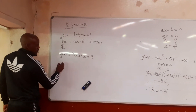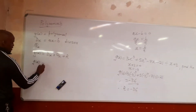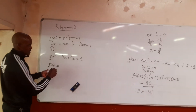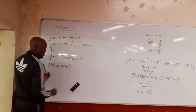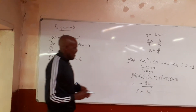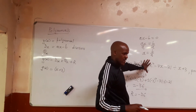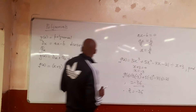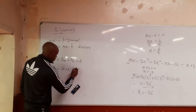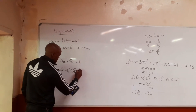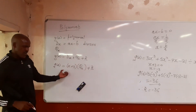Our divisor for g(x) was x plus 3. Since we used the Remainder Theorem, we only found the remainder — we didn't get the quotient. So there will be no quotient here; you multiply by the quotient and add the remainder. This is the Remainder Theorem.